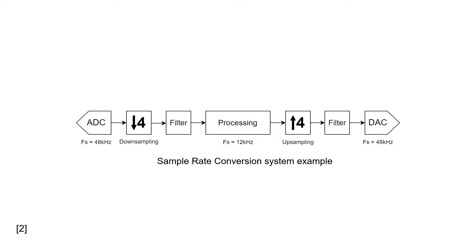Let's say we have a speech processing system with an ADC and a DAC running at 48 kHz. This results in an input and output with bandwidth of 24 kHz. Let's assume the human voice ranges between 0 and 6 kHz, hence it has the bandwidth of 6 kHz. This means that the conversion bandwidth is 4 times wider than the effective bandwidth of the signal, which allows us to reduce the input signal bandwidth by 4 times without losing any useful information, leading to reduction of the memory and computational requirements.